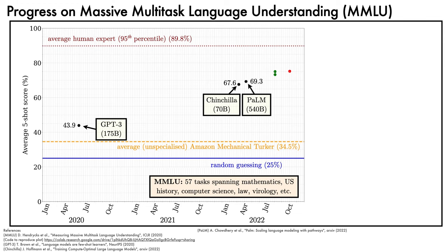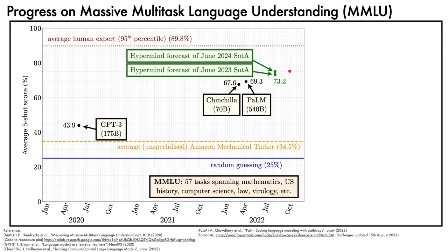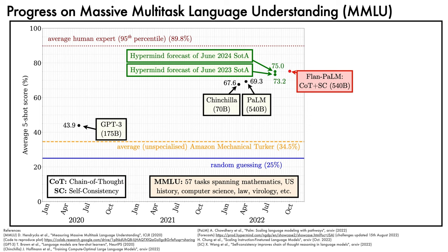As part of an innovative competition organised by Jacob Steinhardt's group, competitive forecasters on the HyperMind platform estimated that by June 2023, state-of-the-art on this benchmark would reach 73.2%, while by June 2024, it would reach 75.0%. These forecasts were last updated over a period of a few weeks ending in August 2022. Using instruction fine-tuning with chain of thought and self-consistency prompting, Flan-PaLM scores 75.2%. Interestingly, this comes ahead of not only the June 2023 HyperMind forecast, but also the June 2024 forecast, 20 months earlier than expectations.